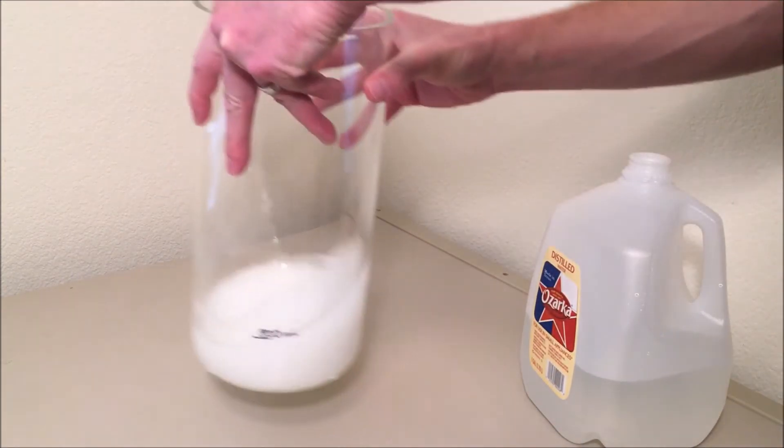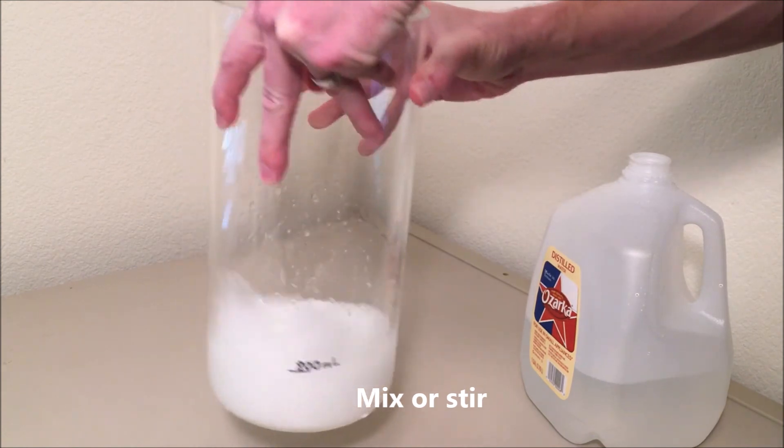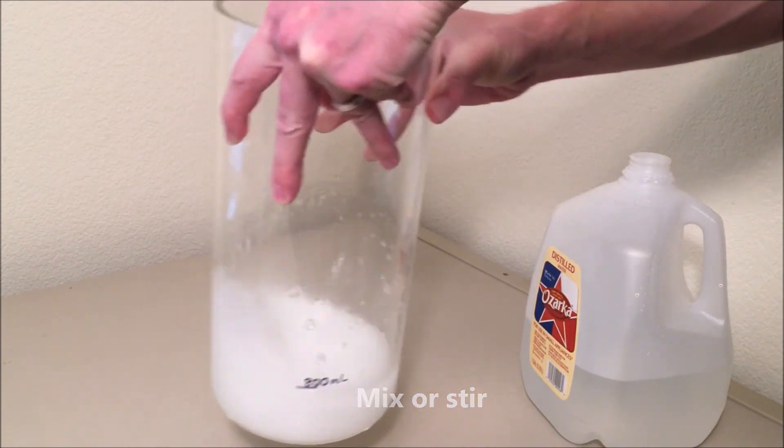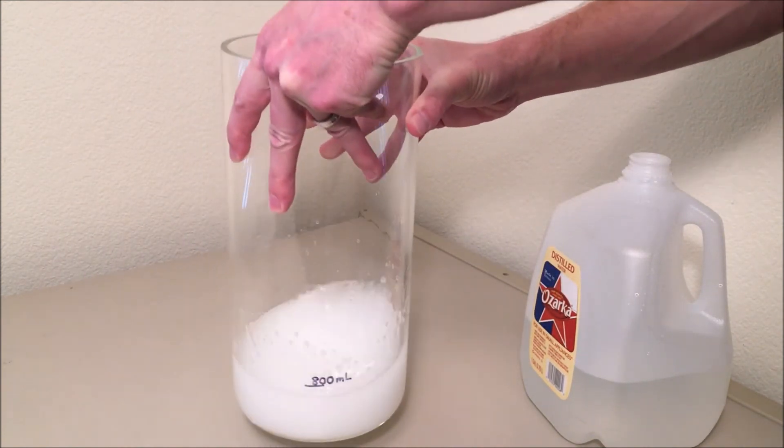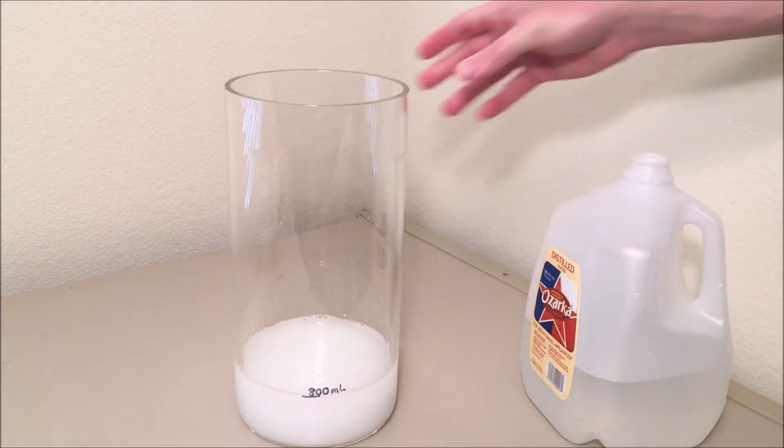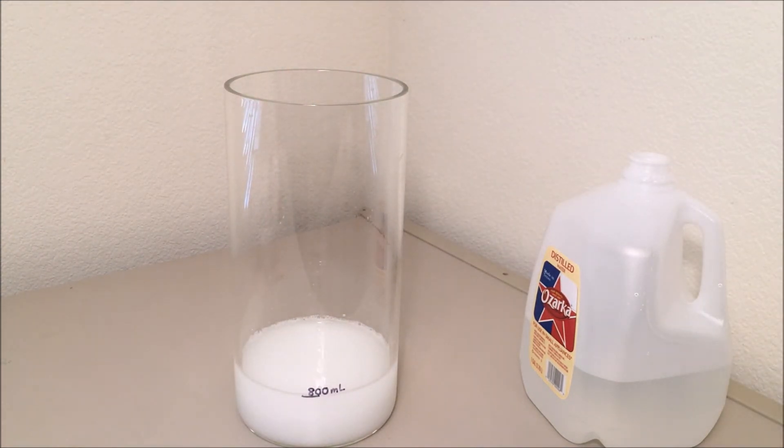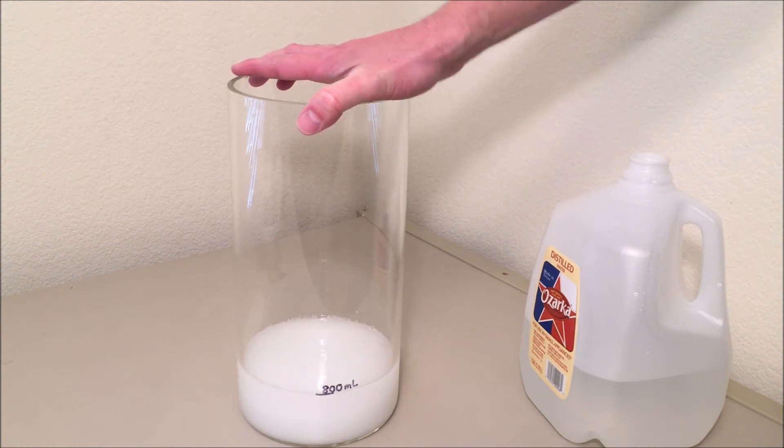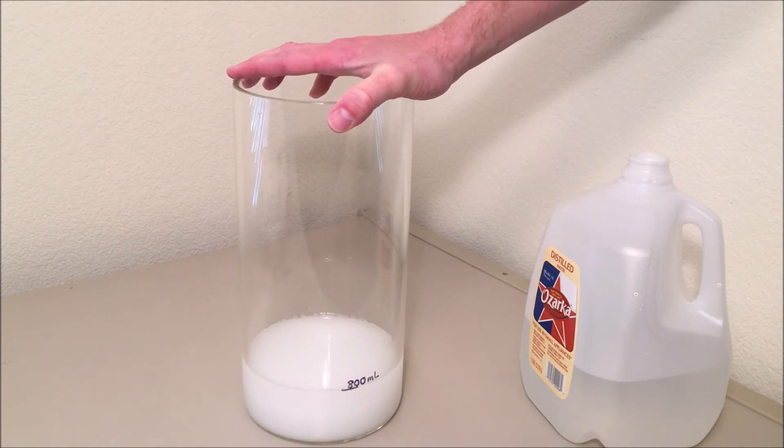And continue to mix and make sure it's thoroughly mixed. If you're able to, it might actually help to heat the water before mixing to about 60 degrees Celsius. And that may help to dissolve the magnesium chloride a little bit better.